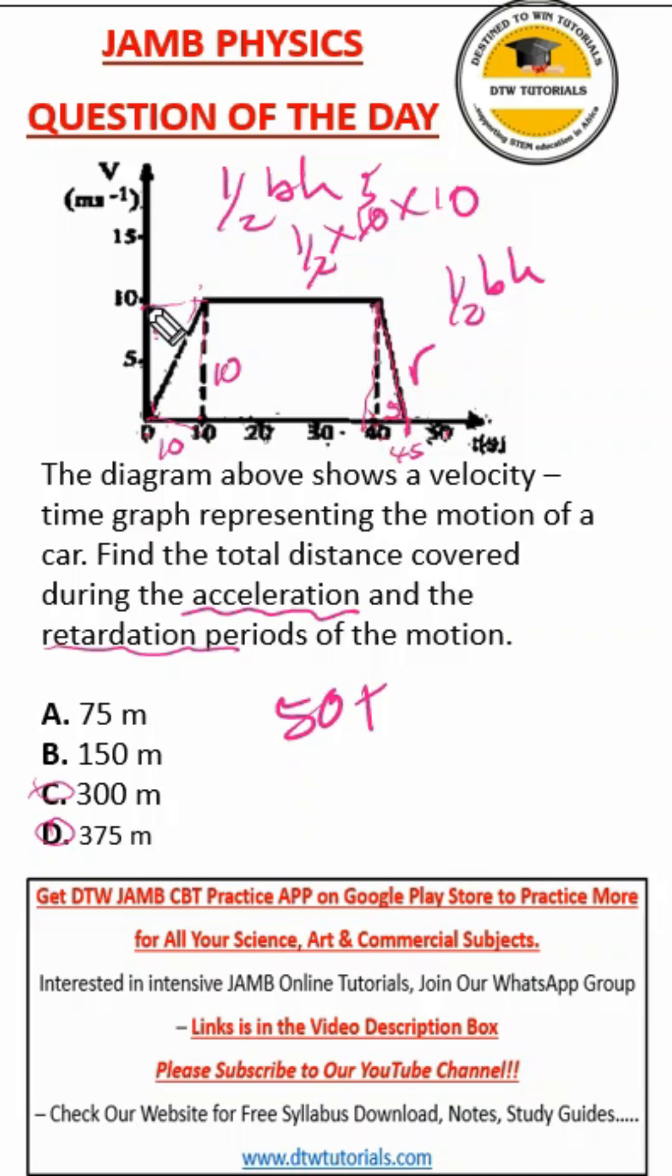And the height still remains the same, which is what? From here to here, which is 10. So we have half times our base, which is 5, times our height, 10. So we'd cancel this 10 here to give us 5. 5 times 5 is 25.